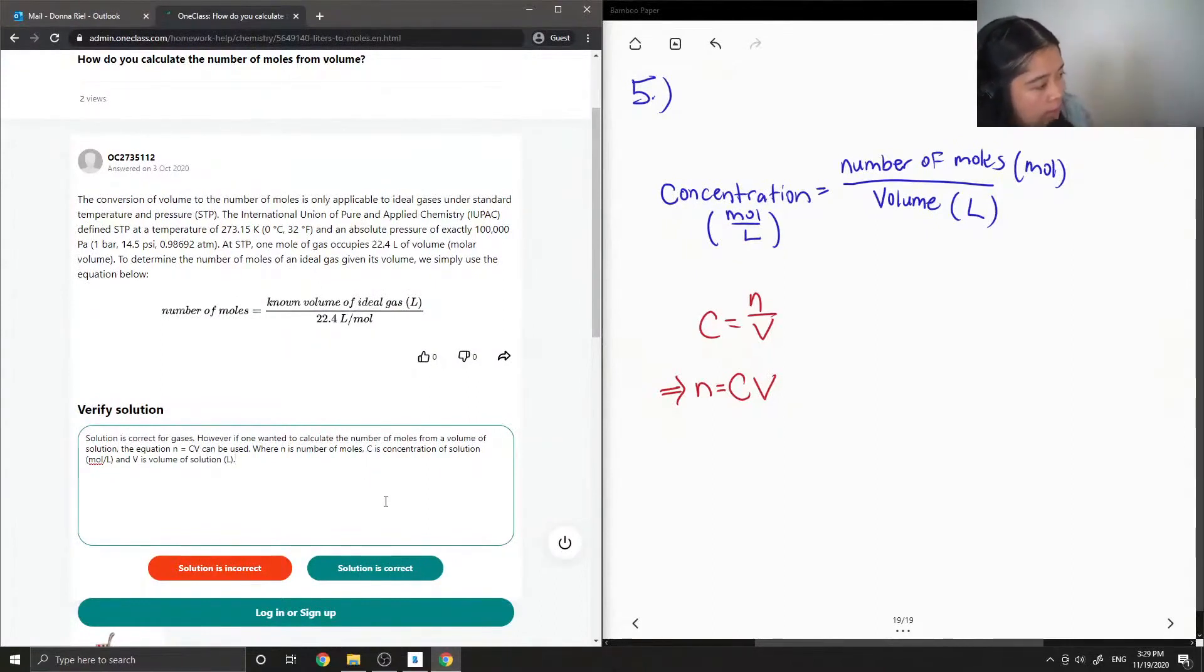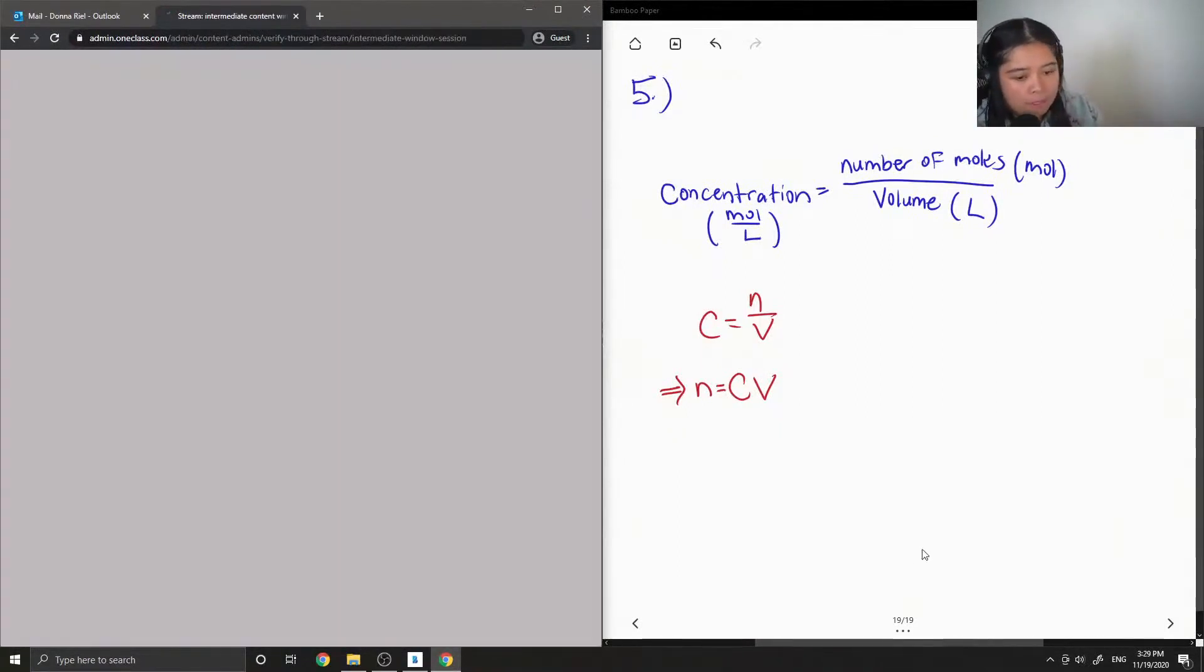Okay, so I said that this solution is correct for gases. However, if one wanted to calculate the number of moles from a volume of solution, the equation n equals CV can be used, where n is the number of moles, C is concentration of solution, and V is volume of the solution. Okay, so I just added that.